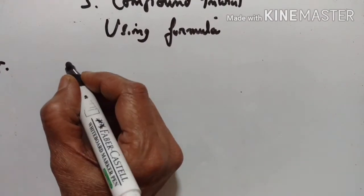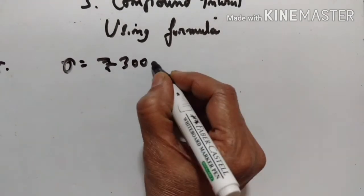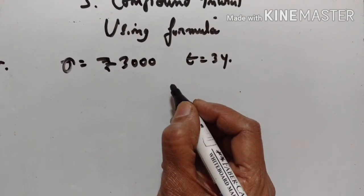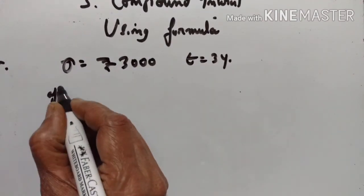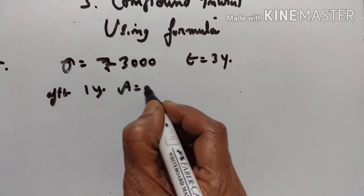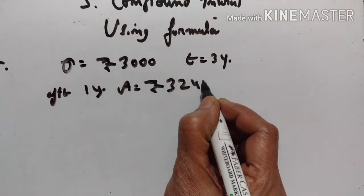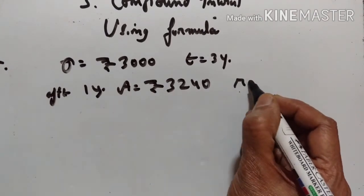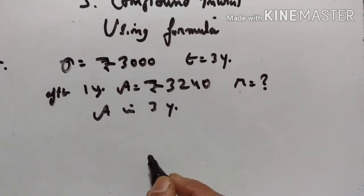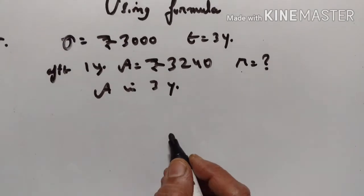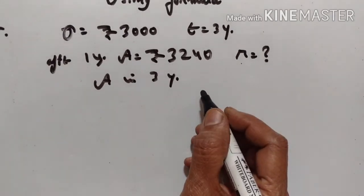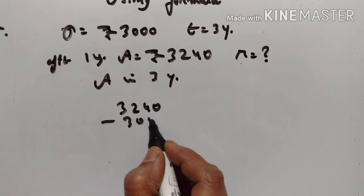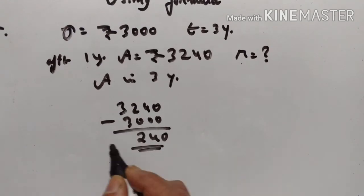25th problem. A man invests rupees 3000 for 3 years at compound interest. After 1 year, the money amounts to rupees 3240. The interest in 1 year is rupees 3240 minus rupees 3000, which is equal to rupees 240.